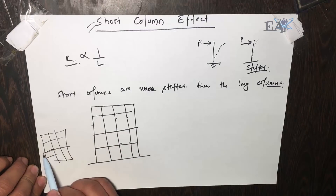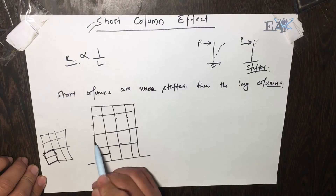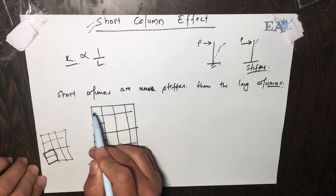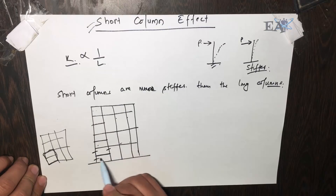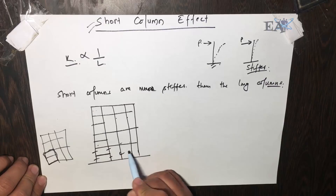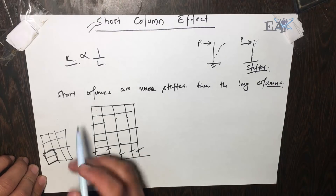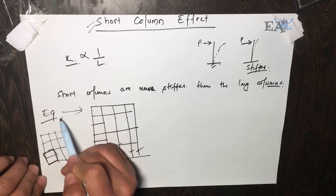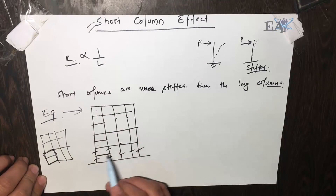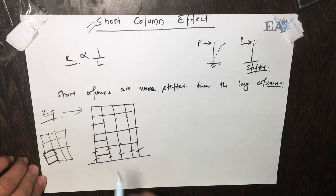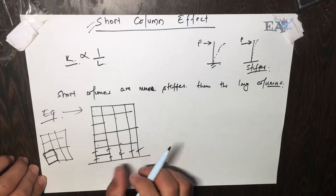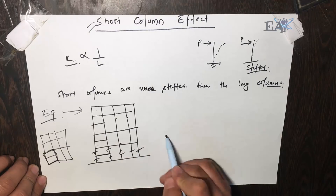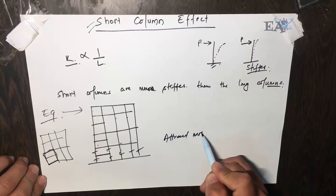In this situation, there is a void for the staircase, and you have a landing beam here. The length of these four columns is shorter compared to these three columns. When an earthquake hits and gives a lateral load, the displacement of the short columns is the same as the displacement of the long columns. In this situation, these four short columns attract more force.